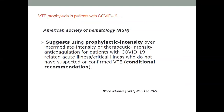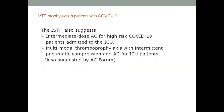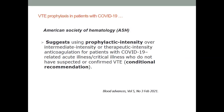The ASH recommendation from February 2021 suggests using prophylactic intensity over intermediate or therapeutic intensity anticoagulation for patients with COVID-19 related acute illness — specifically for those with non-critical disease — who have no suspected or confirmed VTE. This is a conditional recommendation. We always have to pay attention to the strength of the recommendation — being conditional means it doesn't require direct adherence without considering context.